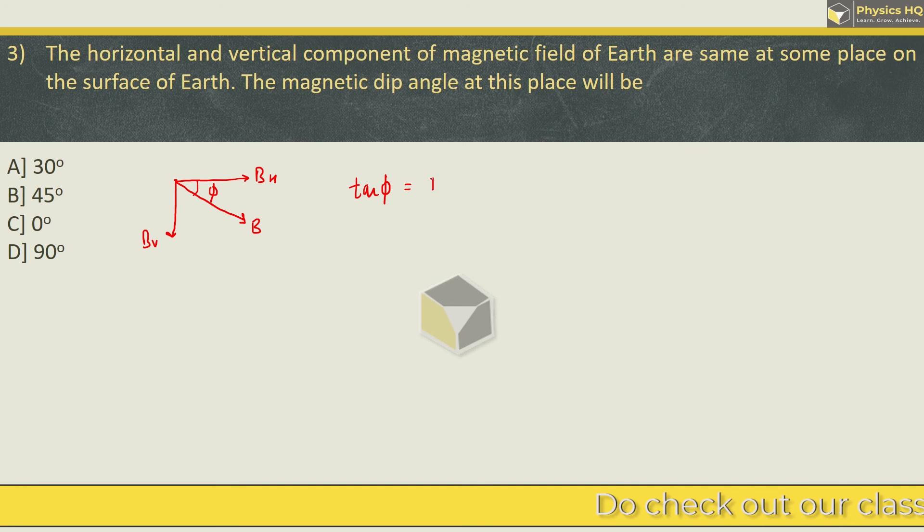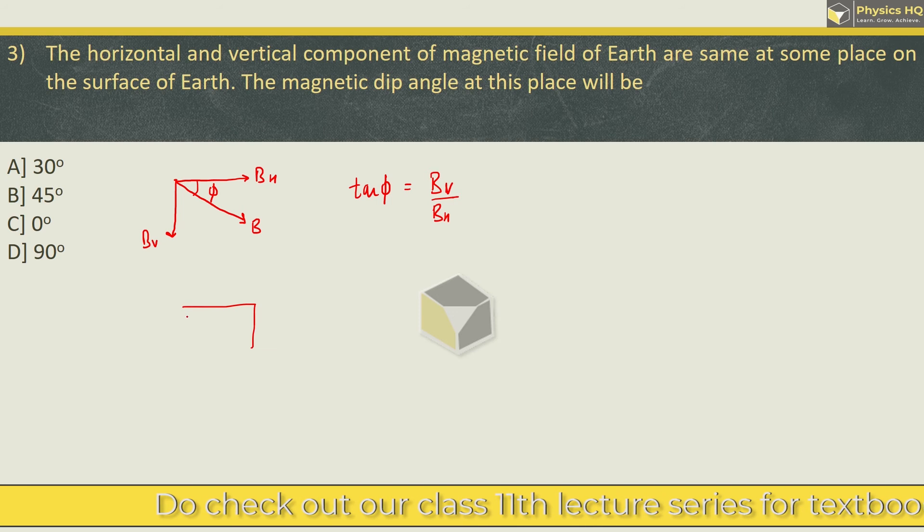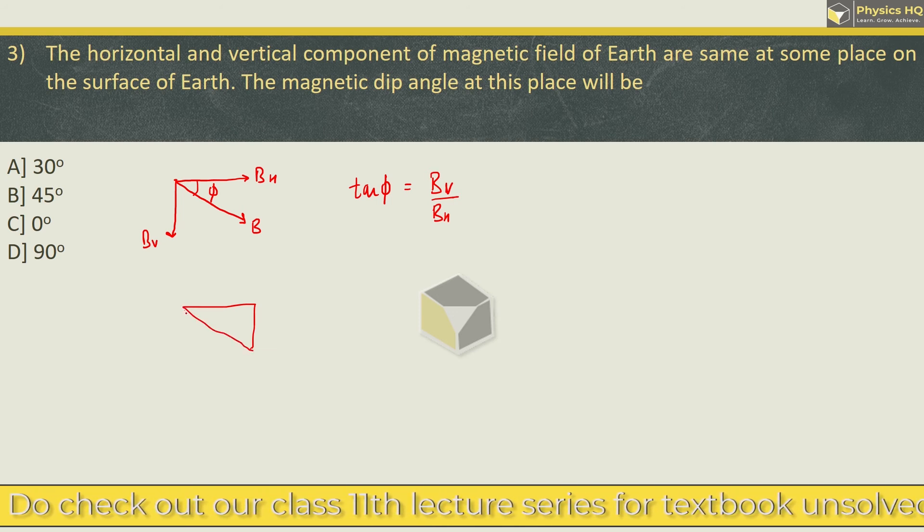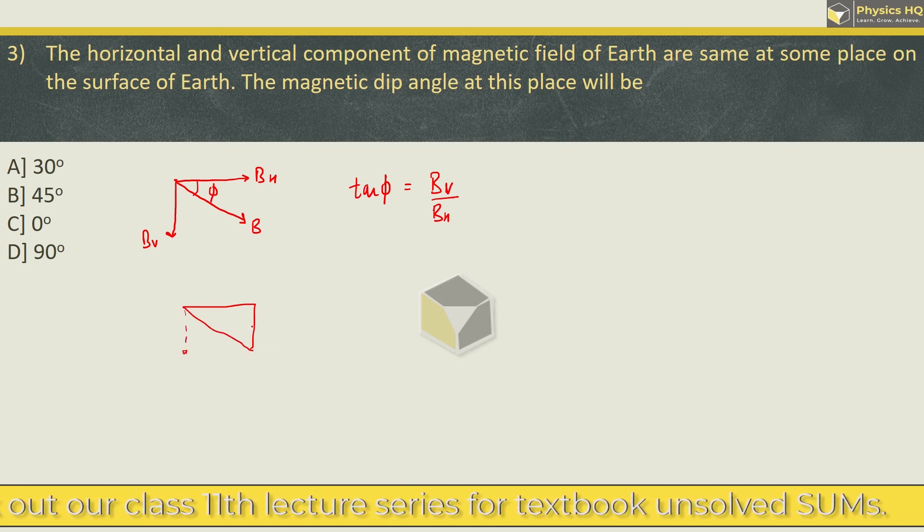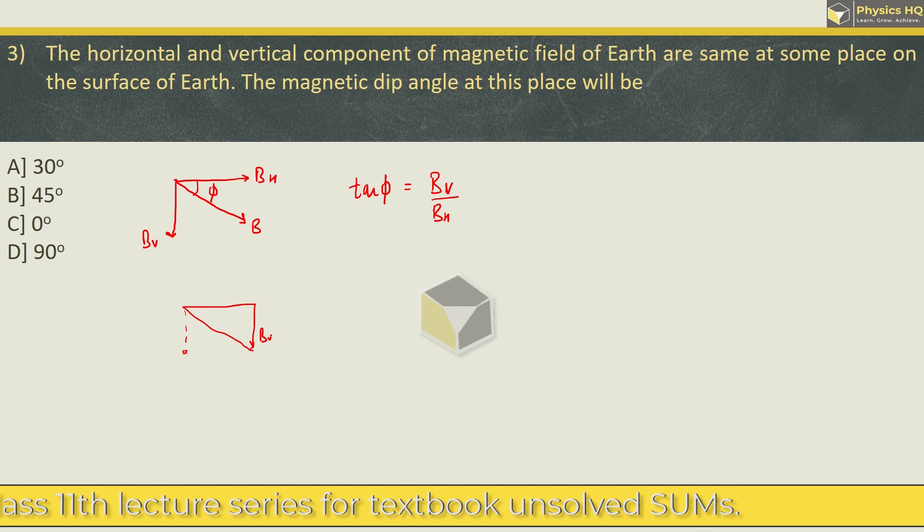Now this angle of dip, tan δ comes out to be BV upon BH. Because if you complete this triangle, then it will form something like this. This is BV which was here, we have shifted here. So this is BV and this is BH. This is δ, so tan δ will be BV by BH, vertical field upon horizontal field.